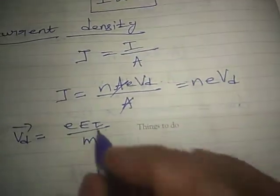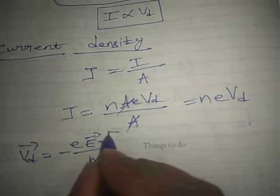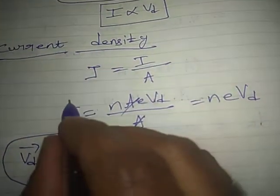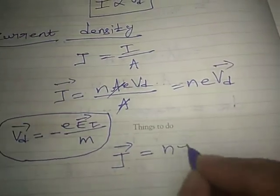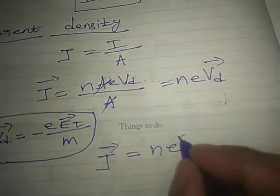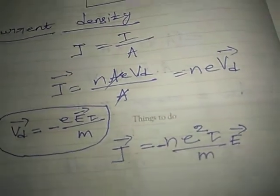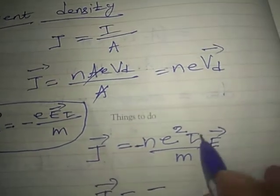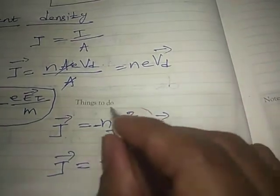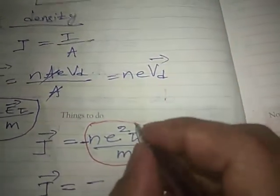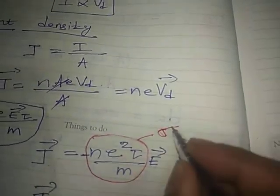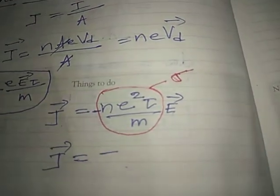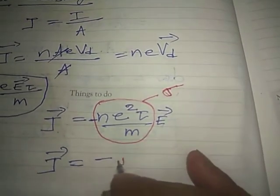In vector notation, the drift velocity VD vector = −eEτ/m. Since the electron has a negative charge (−e), we substitute into J = neVd vector. This gives J vector = n × e × (−eEτ/m), which simplifies to J vector = −ne²τ/m × E vector.